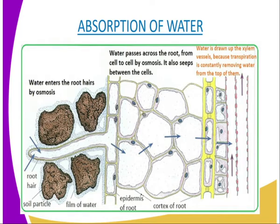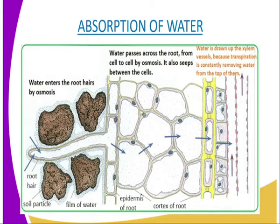More water drawn into the root hair cells dilutes the cell sap, making it less concentrated than that in the adjacent cortex cell of the root, as you can see from our diagram. Due to osmotic gradient, the water moves from one adjacent cell to the next by osmosis. Similarly, water passes through the successive cortex cells until it enters the xylem vessels located in the center of the root. These xylem vessels of the root then conduct the water into the xylem vessels of the stem and into the xylem vessels of the leaves.